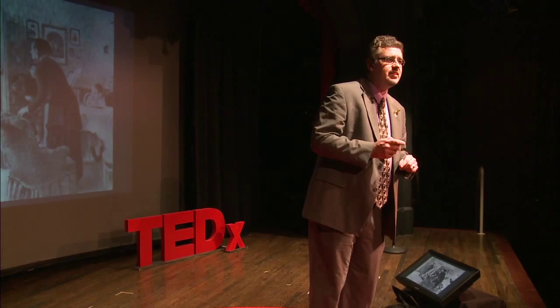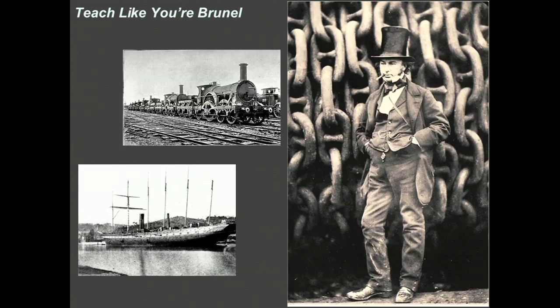Rule number four is to teach like Isambard Kingdom Brunel. Brunel created such amazing wonders of his day as a tunnel beneath the Thames River, the Great Western Railroad, the SS Great Britain — all amazing, never-before-done accomplishments. He did it by putting into effect rule number four: planning is important, but imagination is what makes the extraordinary possible. We don't get new and innovative ideas by doing the same things we've always done the same way we've always done them.